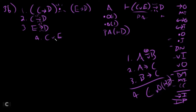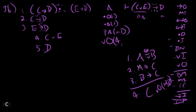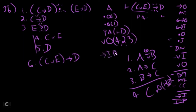So plugging in: our or is C wedge E, corresponding to A wedge B in the rule. C arrow D corresponds to A arrow C, and E arrow D corresponds to B arrow C. The right side of both arrows is D — so we get D. Wedge out. You always need three citations: where was the disjunction? Line four. Where was the left or-part as an antecedent? Line two. Where was the right or-part as an antecedent? Line three. We were trying to get D — we got it. Zoom out: if you've got C wedge E, you can get D. Arrow in, four through five. Three B is done.